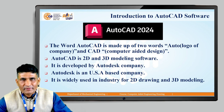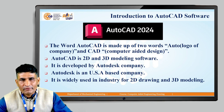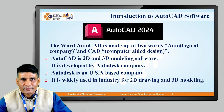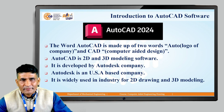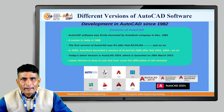AutoCAD is a combination of two words: Auto and CAD. 'Auto' refers to Autodesk, the company that developed this software, and 'CAD' means computer-aided design or computer-aided drawing. AutoCAD is a 2D and 3D modeling software developed by Autodesk, a USA-based company, and it is widely used in industries for 2D as well as 3D drawing.